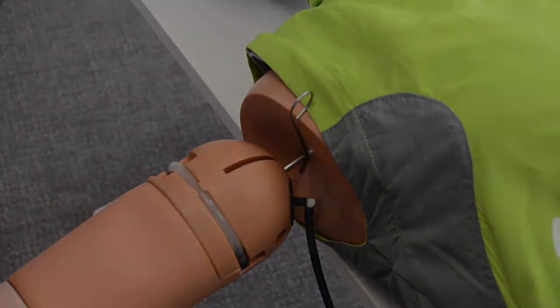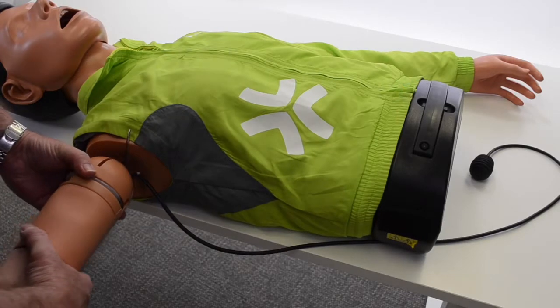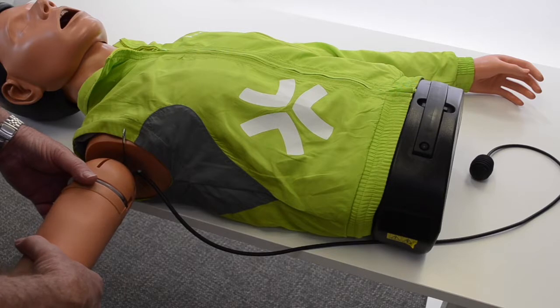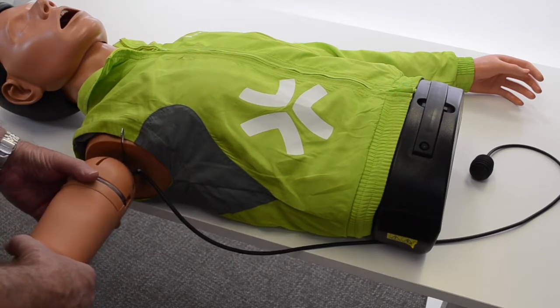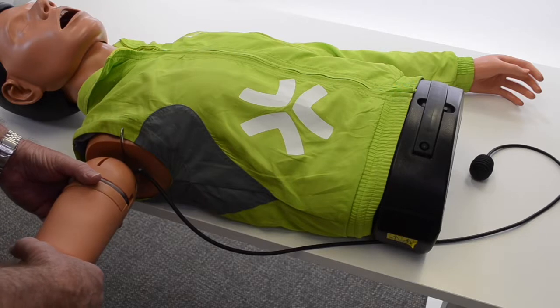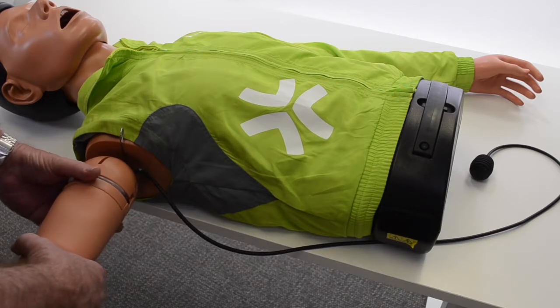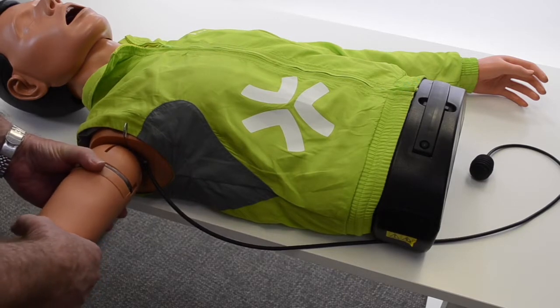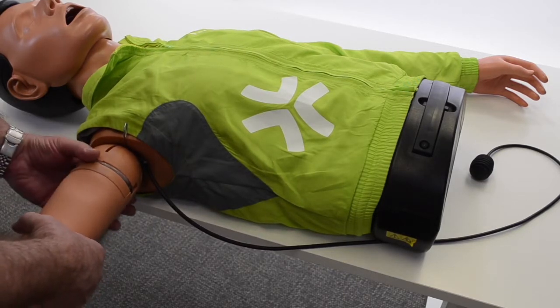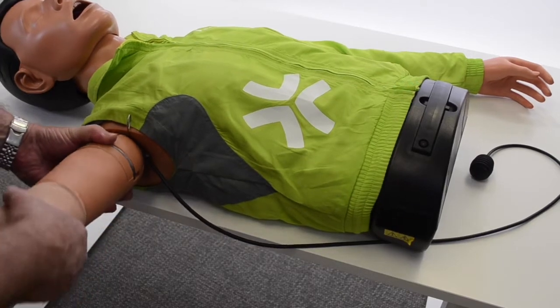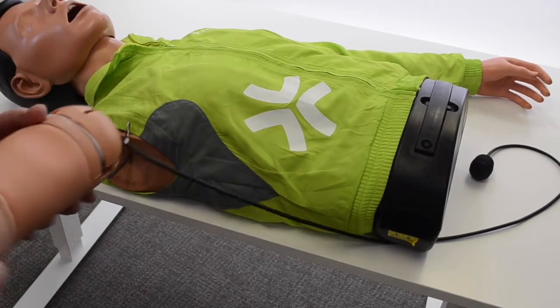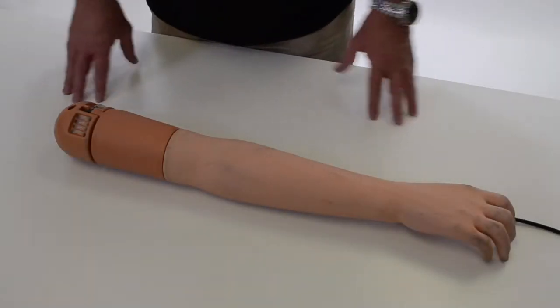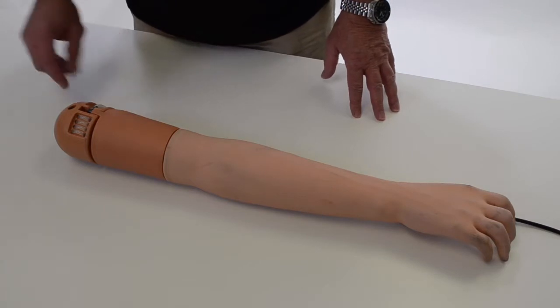Now the mannequin is hooked on by a loop. The easiest way to get to that loop, we're going to push in straight and that takes that loop off of the horizontal pin. Then we're going to lift straight up and the mannequin comes off.